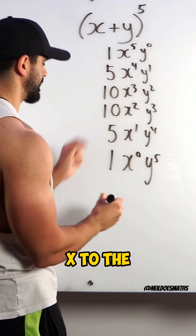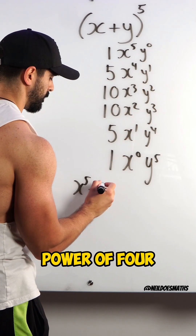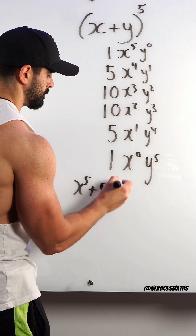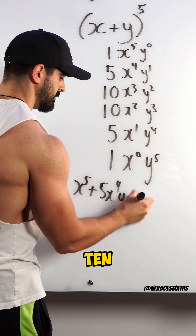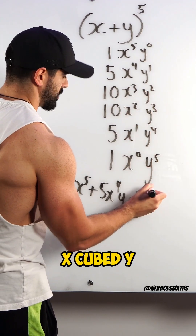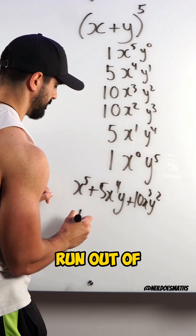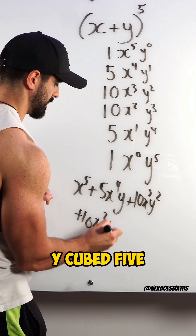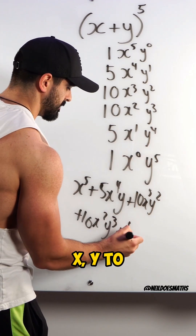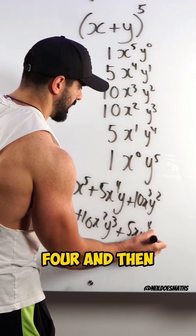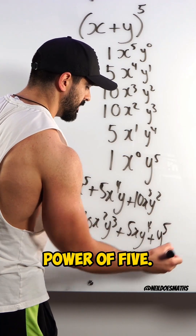We can simplify. We have one x to the power of five. We have five x to the power of four — and don't forget your y. Then we have 10 x cubed y squared. We have 10 x squared y cubed. Five x, y to the power of four. And then finally, x to the power of zero is one, so we're left with y to the power of five.